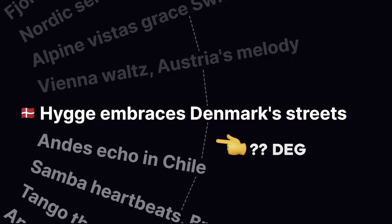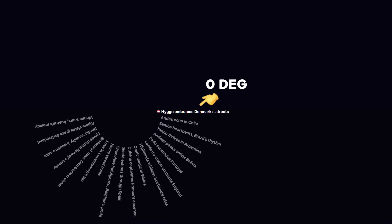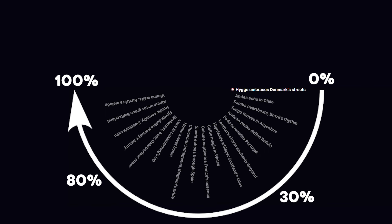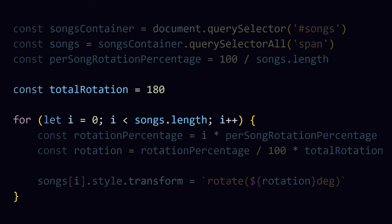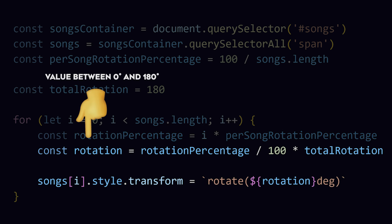We need to decide how far we want to rotate each text element. For simplicity, the first song should not be rotated at all, the last song should be rotated 180 degrees, and every other song somewhere in between. The percentage that each song should rotate is 100% divided by the amount of songs. Now we can loop over all the songs and calculate how many percent of the 180 degrees each element should rotate, then calculate the final rotation based on that.